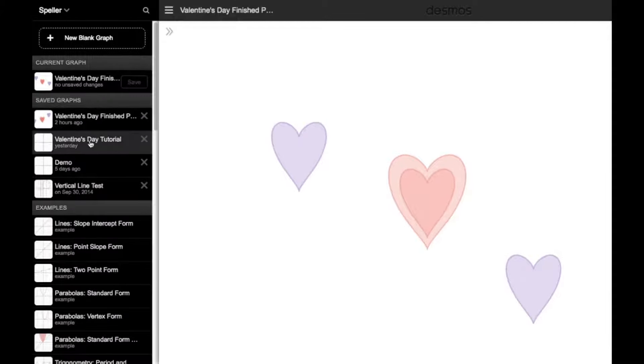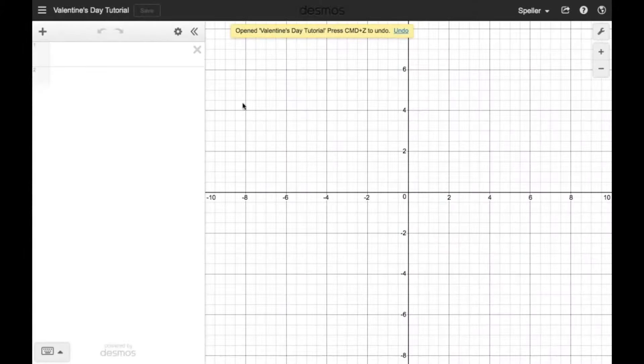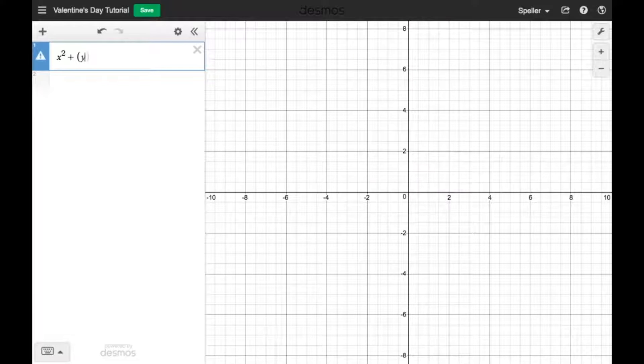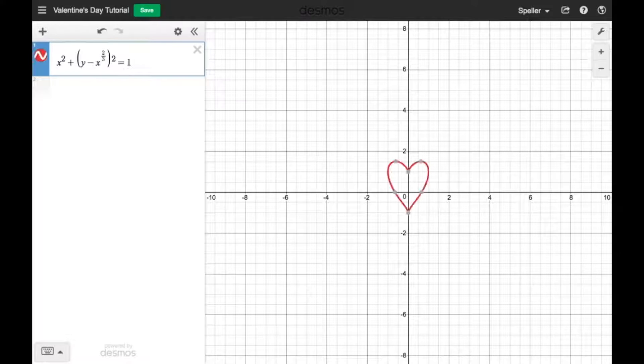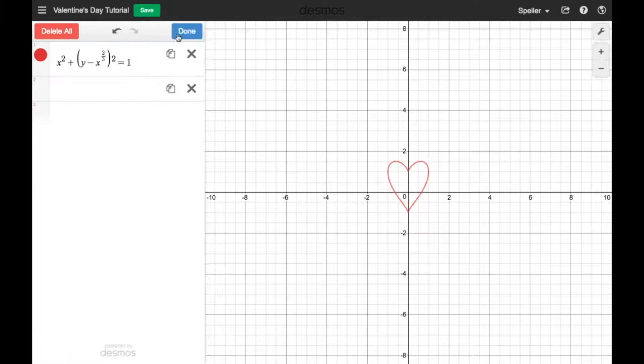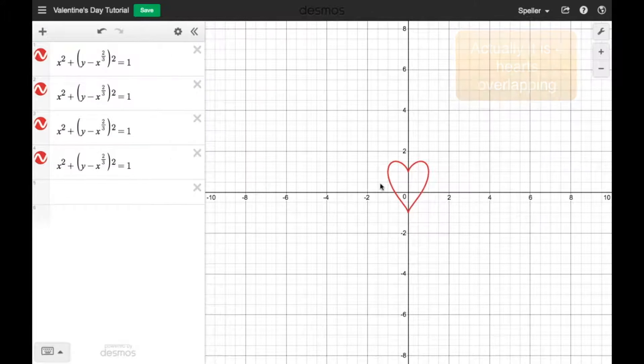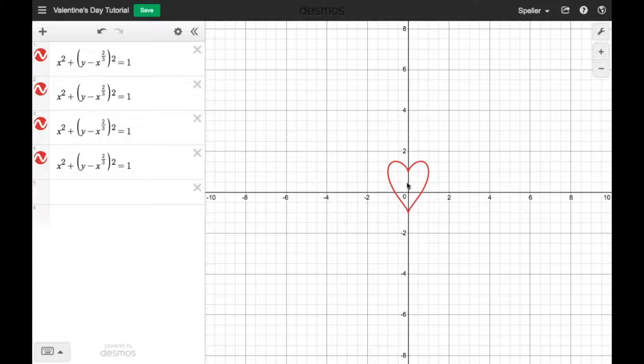Let's go to a clean slate here and click on open graph and put in the heart equation. That's going to be x raised to the second power. We're going to add y minus x raised to the two thirds power, which we said is the same thing as the cube root of x squared. We're going to take that quantity and square it and set that equal to one so that creates our first heart. We're going to need four hearts. So let's click the gear and duplicate this first equation three more times. So now we really have three hearts sitting here. We can only see it appears to be one.